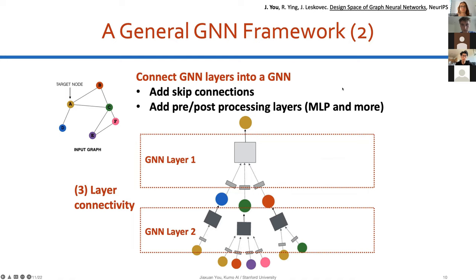After defining a GNN layer, we connect them into a full graph neural network by stacking layers together. We can make this more complex — for example, adding skip connections between layers to prevent the over-smoothing problem. It is also often advised to add pre- or post-processing MLP layers before and after the GNN layers: pre-processing your raw features before feeding into the GNN, and post-processing to further transform the node embeddings learned by the GNN, which is useful in many domain applications.